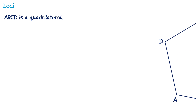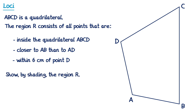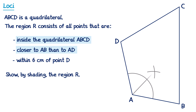For the next question: ABCD is a quadrilateral. Region R consists of all points inside the quadrilateral ABCD, closer to AB than AD, and within 6cm of point D. Firstly, we're looking for points inside the shape. For the condition closer to AB than AD, we first construct the angle bisector of angle BAD — the locus of points equidistant from AB and AD. Points to the right of this bisector are closer to line AB.